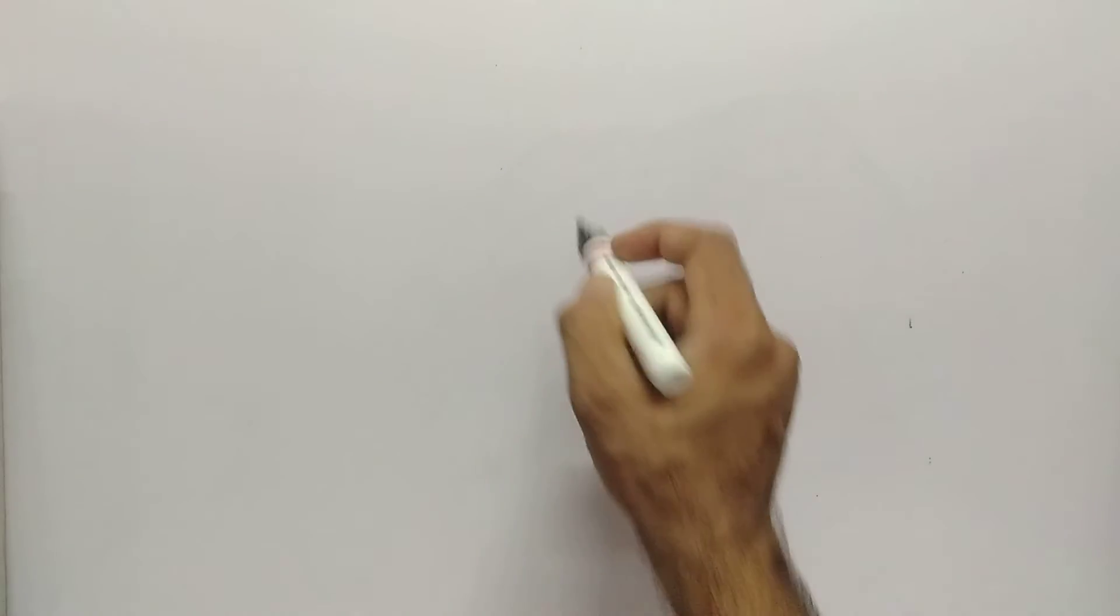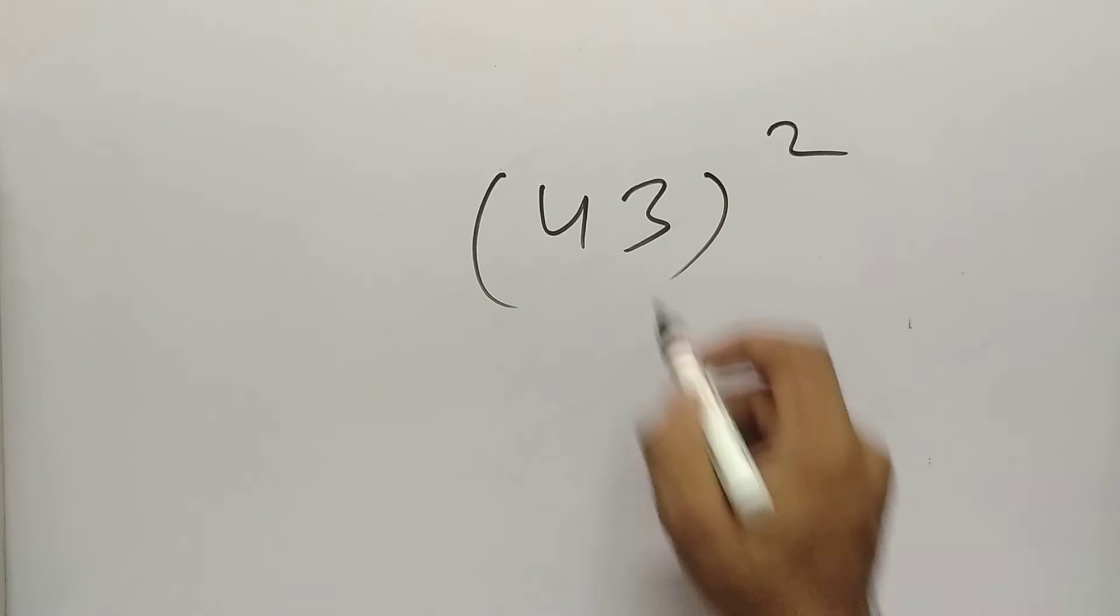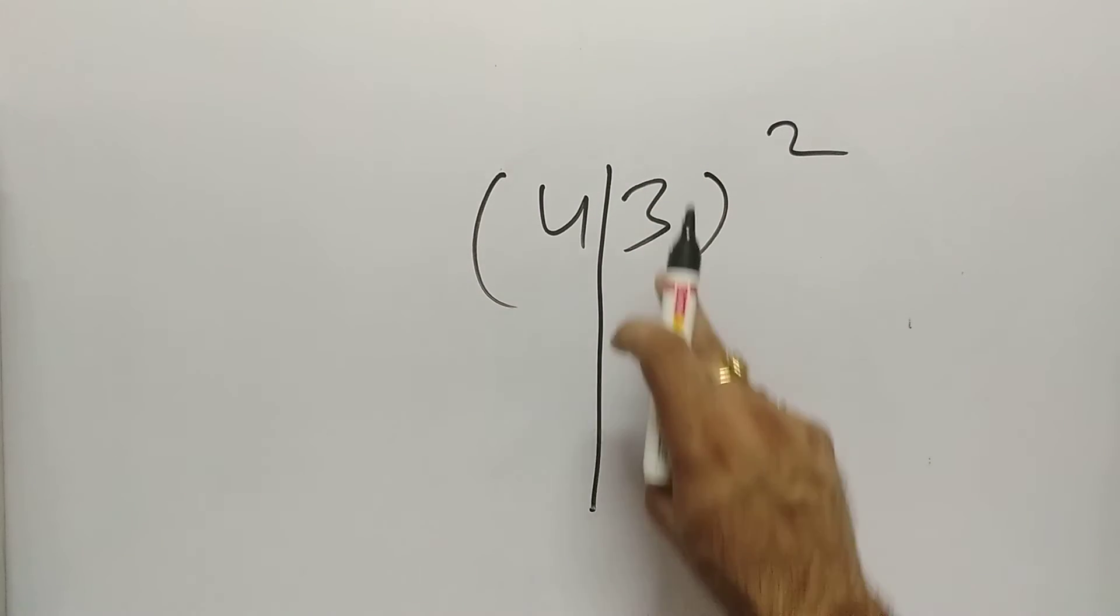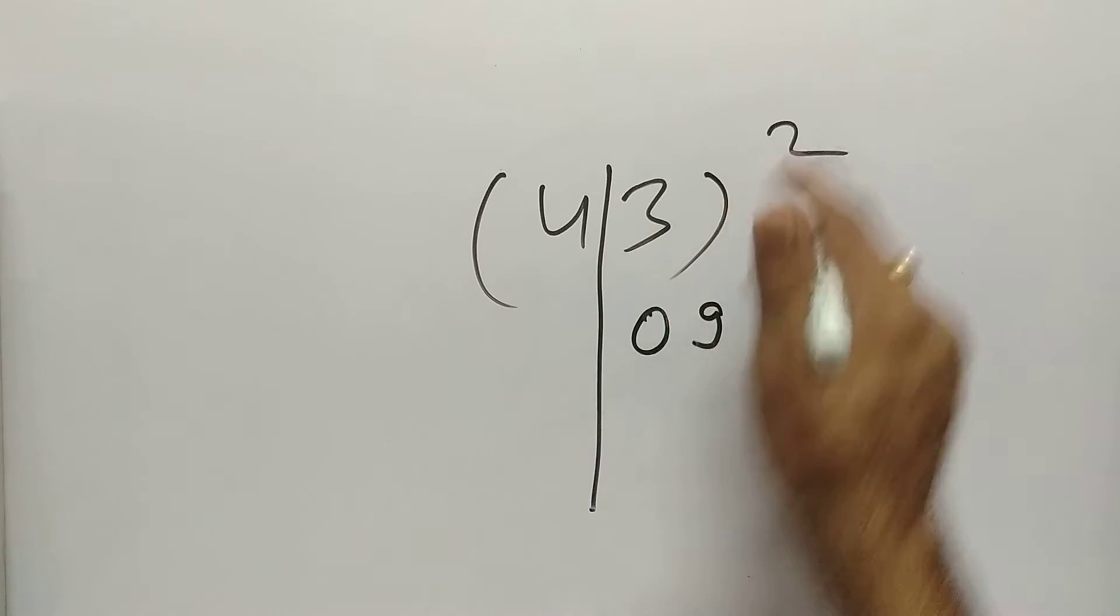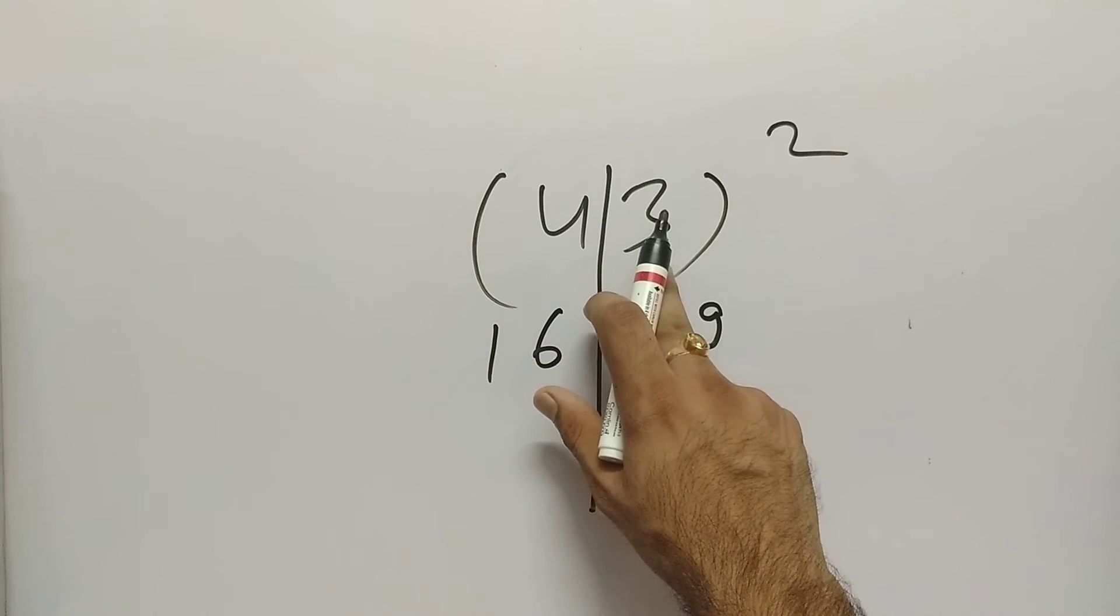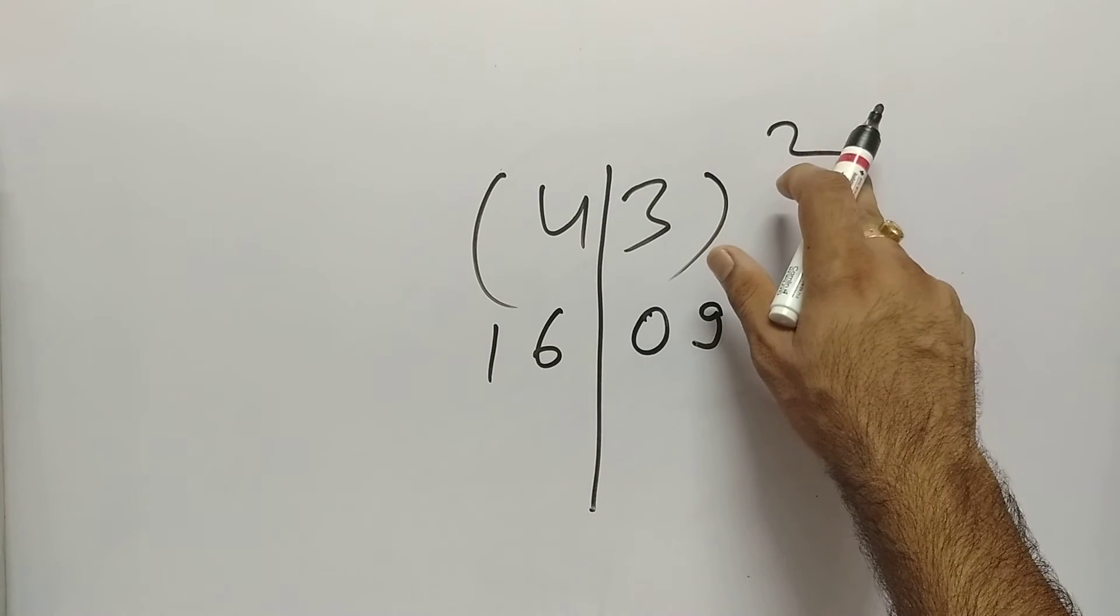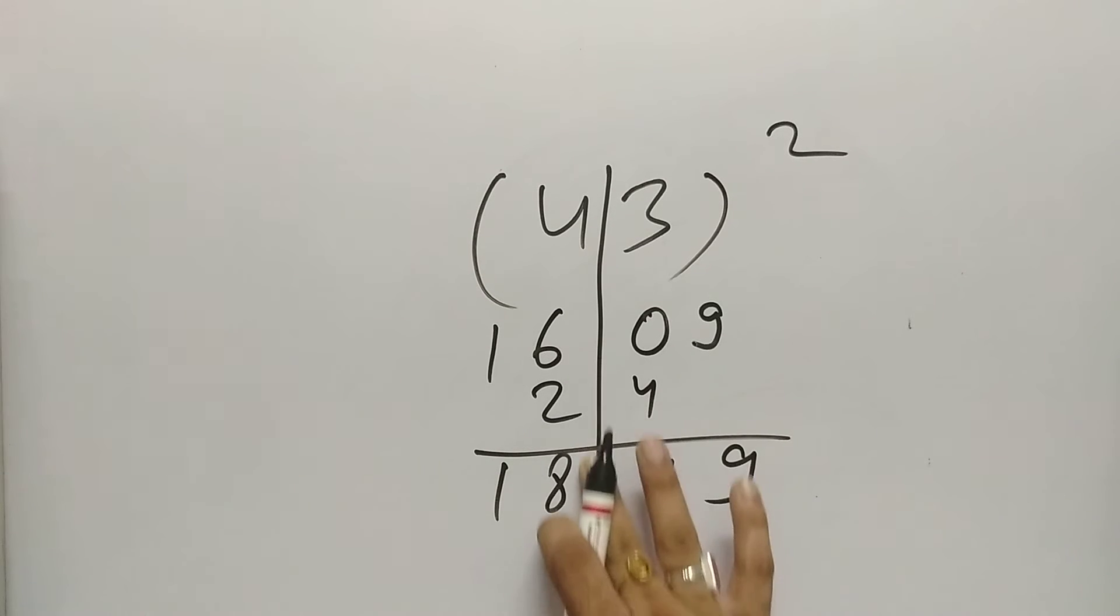Let's take one more example. Suppose the number is 43 square. What we are going to do? We will put a line. 3 square is 09. 4 square is 16. After that 4 times 3 is 12, 12 times 2 is 24. We will put here 9, 4, 8. Is that clear? So the answer is 1,849.